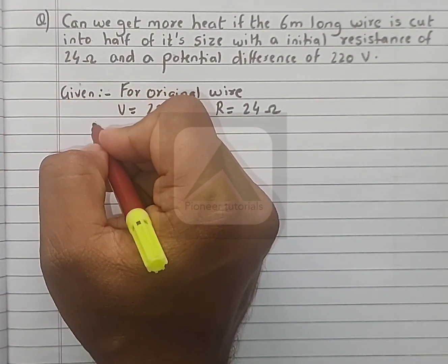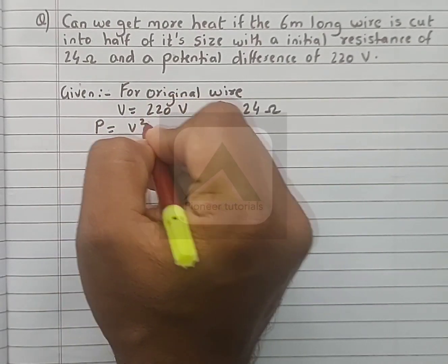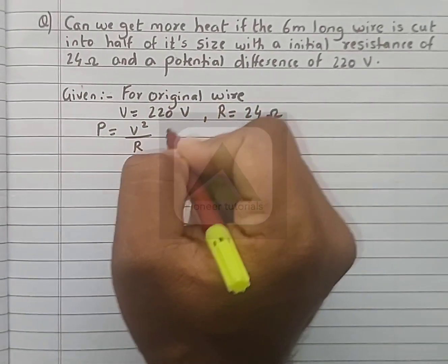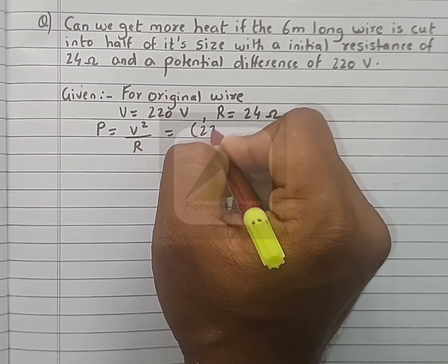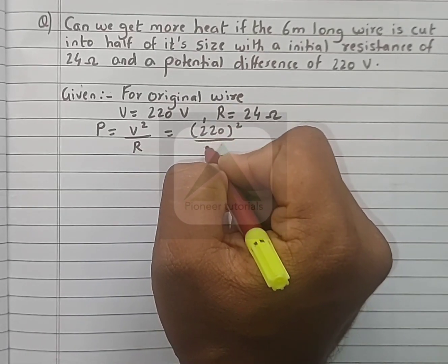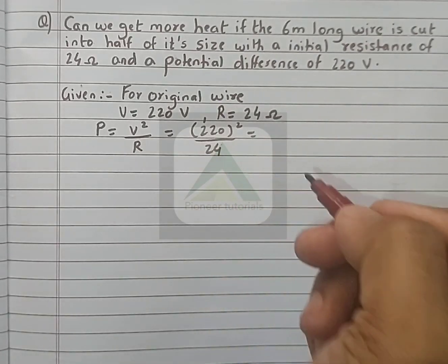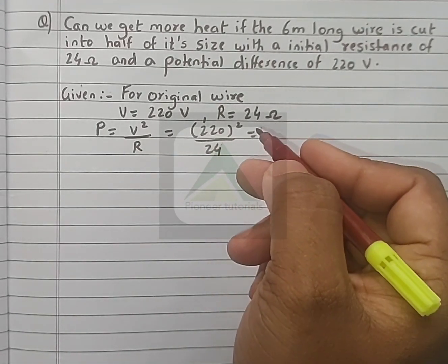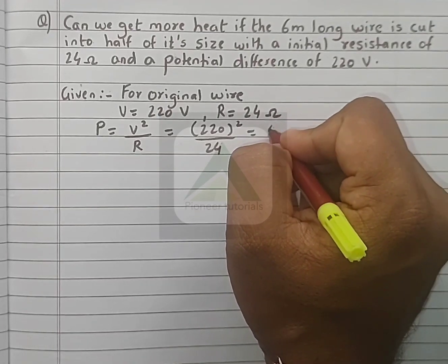Now as I mentioned, the power formula is P = V²/R. So V is 220, write 220 squared upon R that is 24. Now 220 squared, so 220 multiplied by 220, we get 48,400.